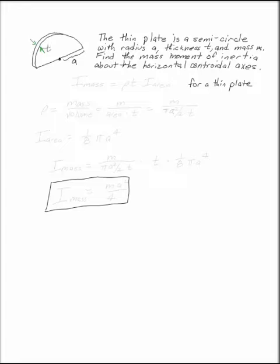So here's our plate. In general, for a thin plate, the mass moment of inertia is equal to the density times the thickness times the area moment of inertia.